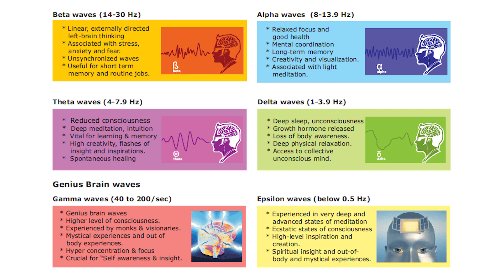Epsilon waves are what monks can literally go into — a very deep and advanced state of meditation that probably takes years of practice. People who reach epsilon waves can body-jump and escape this physical realm. Some people use DMT to get to that state, but some can do it through breathing alone. When I started my meditations, I started feeling my state of consciousness altered, and now when I meditate I feel high — like the THC receptors naturally in my body are being activated.